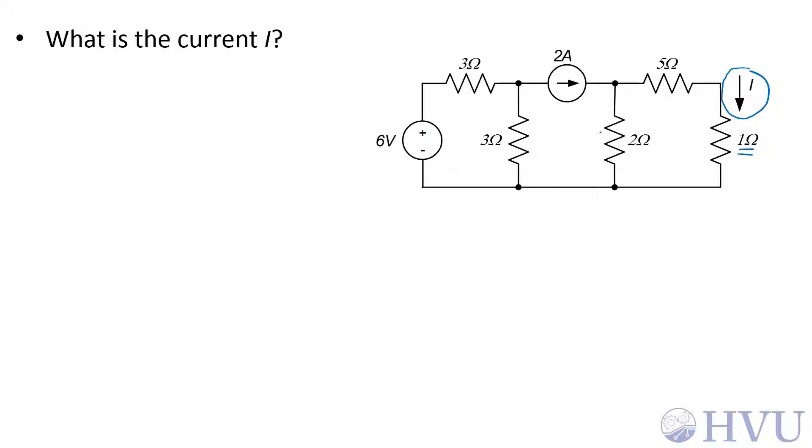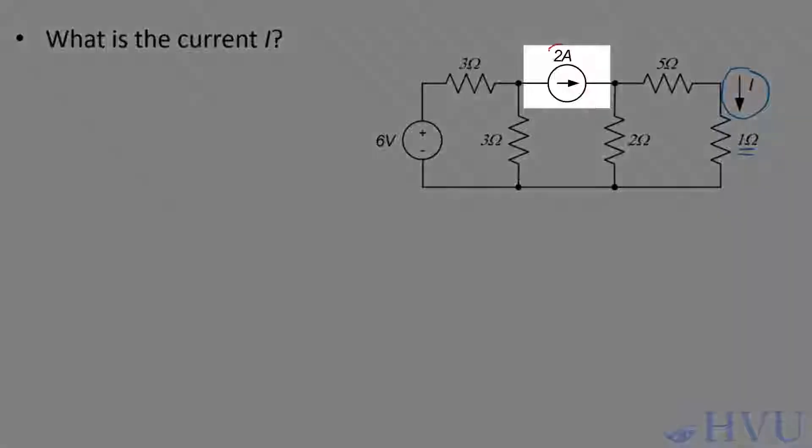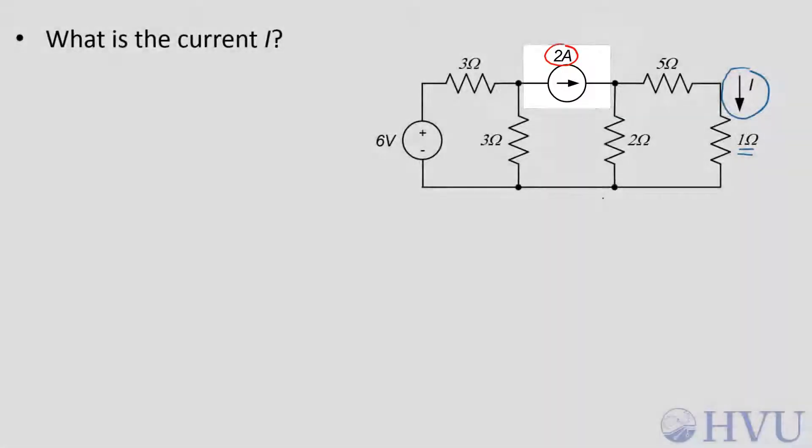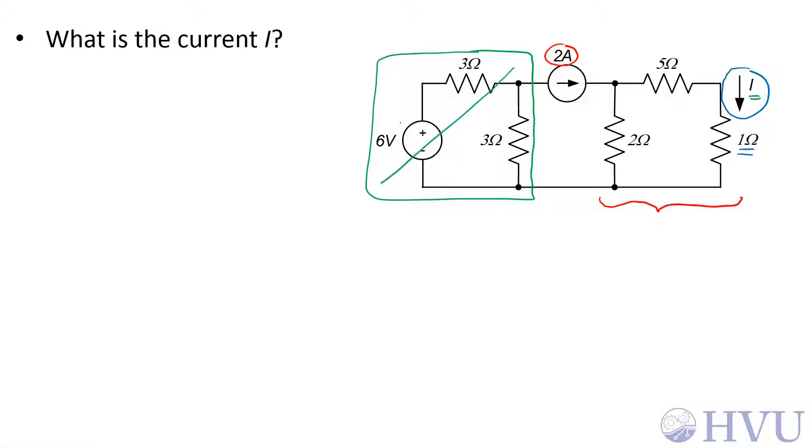The first thing I notice about this circuit is that this 2 amp source is specifying how much current is going into this side of this circuit. So this side of the circuit over here doesn't affect this current and we can ignore this part of the circuit entirely when we're doing our analysis.